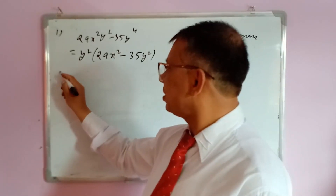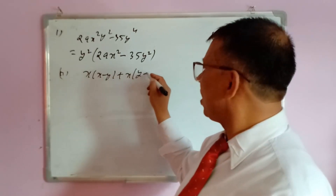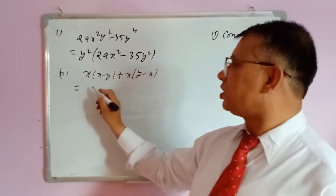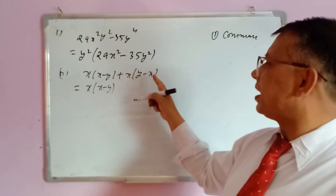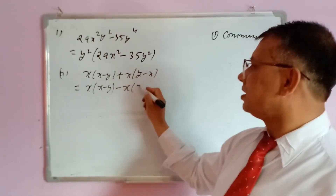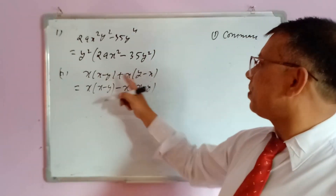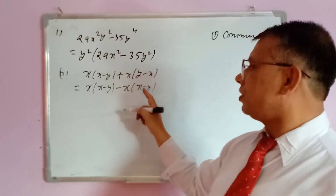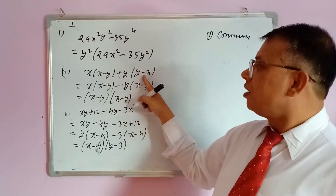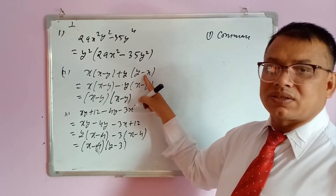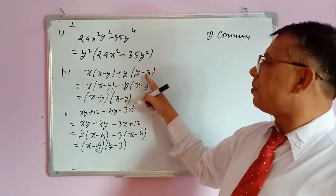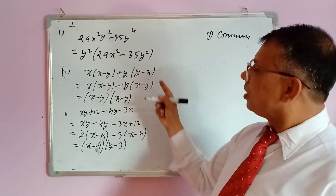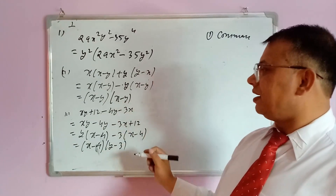Second question: x(x−y) + x(y−x). Nothing is common directly because (x−y) and (y−x) are opposite. To make them the same, we change the sign — plus becomes minus — so y−x converts to x−y. Now (x−y) is common, and the remaining terms are x and y.